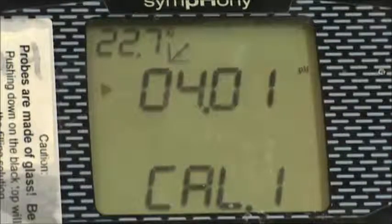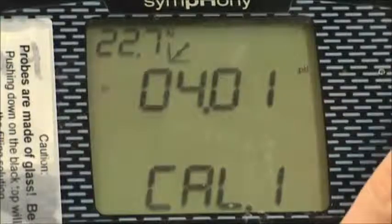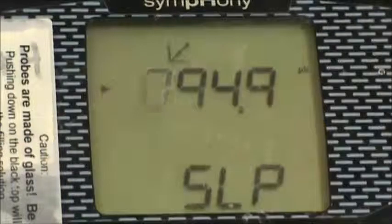You will know that the reading is stabilized when the pH icon on the right side of the screen stops flashing. Press measure to save the value for the calibration.